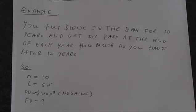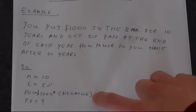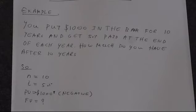First step, let's just extract the information. So we've got N equals 10, I is 5%. Present value is minus 1,000, so emphasize that this is negative. Given our cash flow conventions and we're looking to find the future value.